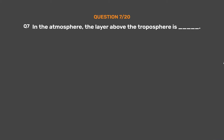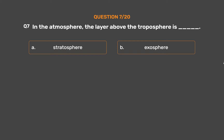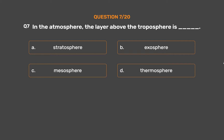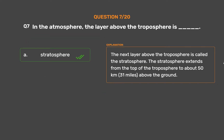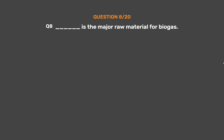Question number seven: in the atmosphere, the layer above the troposphere is underscore. Option A: stratosphere. Option B: exosphere. Option C: mesosphere. Option D: thermosphere. The correct answer is option A, stratosphere. The next layer above the troposphere is called the stratosphere. The stratosphere extends from the top of the troposphere to about 50 kilometers (31 miles) above the ground.